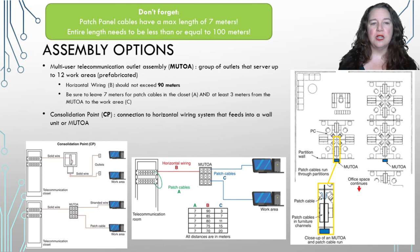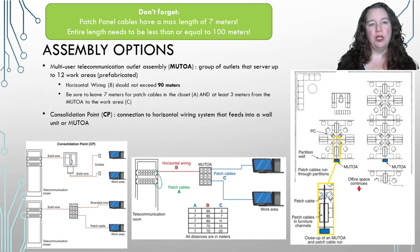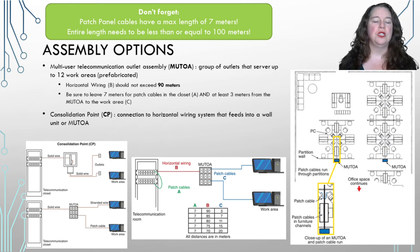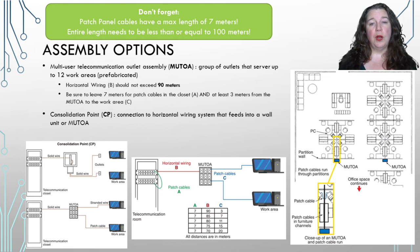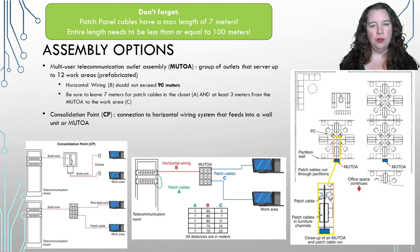You can also use a consolidation point, which is where the horizontal wiring system feeds into the wall unit or MUTOA — from your patch panel to the consolidation point, and then from its outlets to the different work areas. The image here shows a sketch of an office building with partition walls and MUTOAs attached to the back of them, allowing users in an open office environment to connect into them.